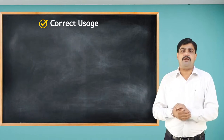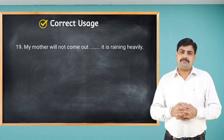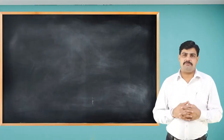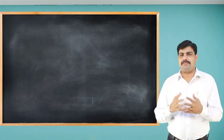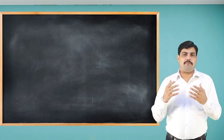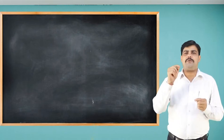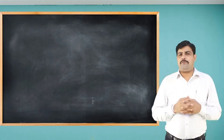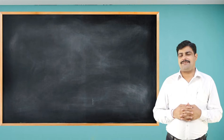'My mother will not come out ___ it is raining heavily' — use 'as': 'My mother will not come out as it is raining heavily.' We have now completed and learned conjunctions, their current patterns, and correct uses. I hope you have learned some important tips and techniques to detect errors in the uses of conjunctions, which will help you in your competitive examinations. In the next video, we shall discuss another important topic. Stay tuned and enjoy learning. Thank you.